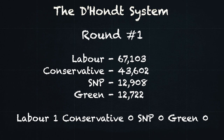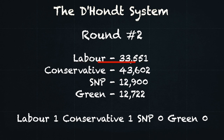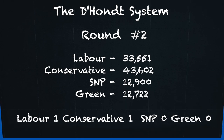Labour had the most votes in round 1 — 67,000 — and were allocated 1 MSP. Their total for round 2 is now their starting total of 67,000, divided by 1 for the number of MSPs they have, plus 1. This means that at the start of round 2, the Conservatives are now the largest party and are allocated 1 list MSP. The process continues until all 7 MSPs have been allocated.